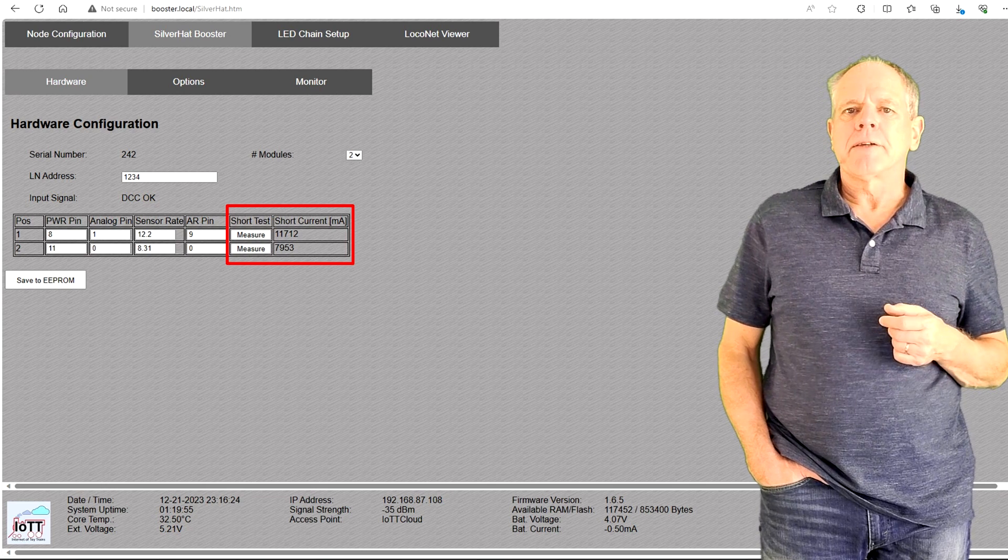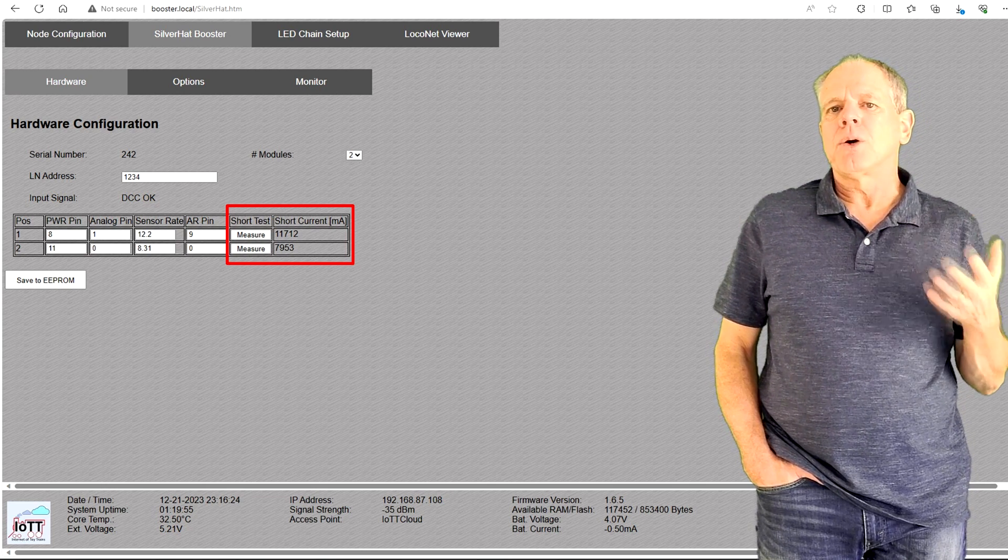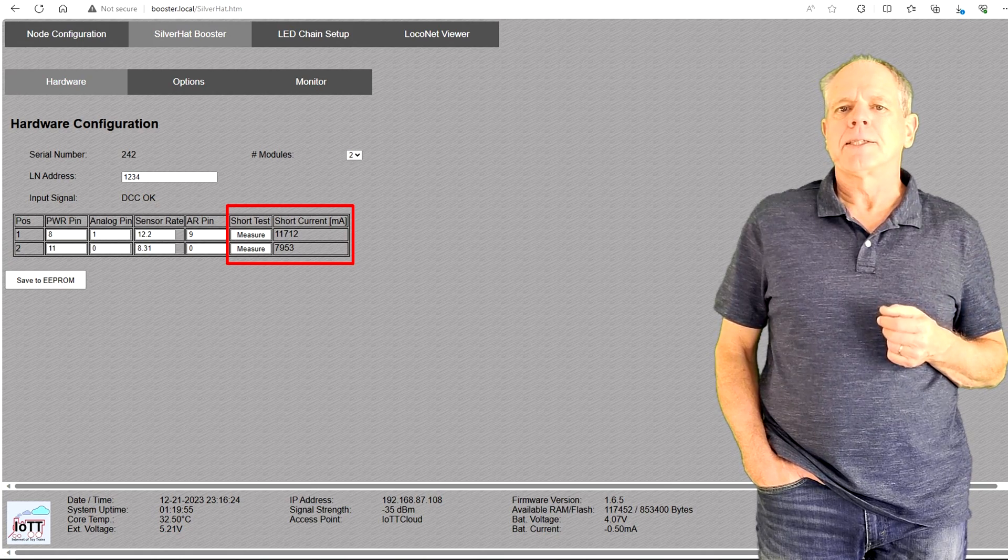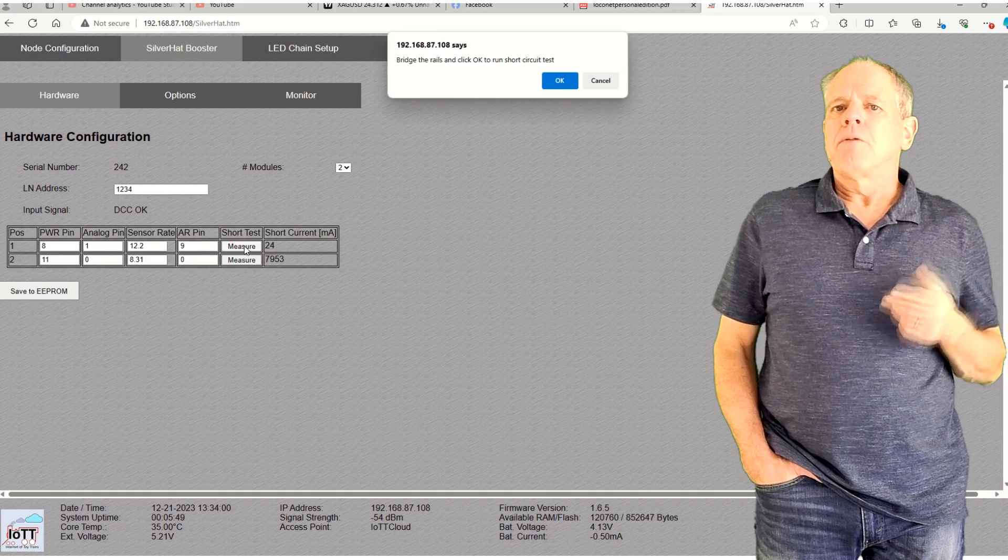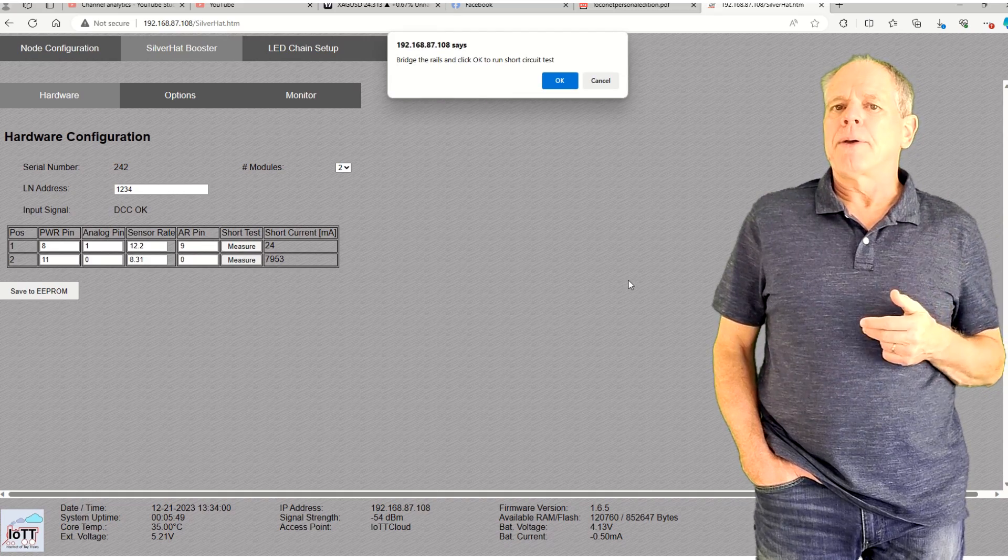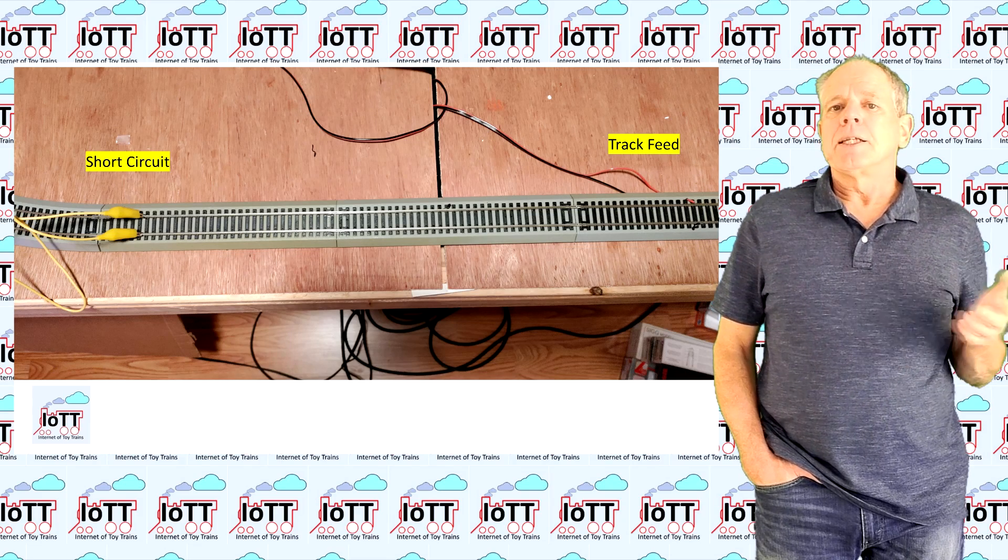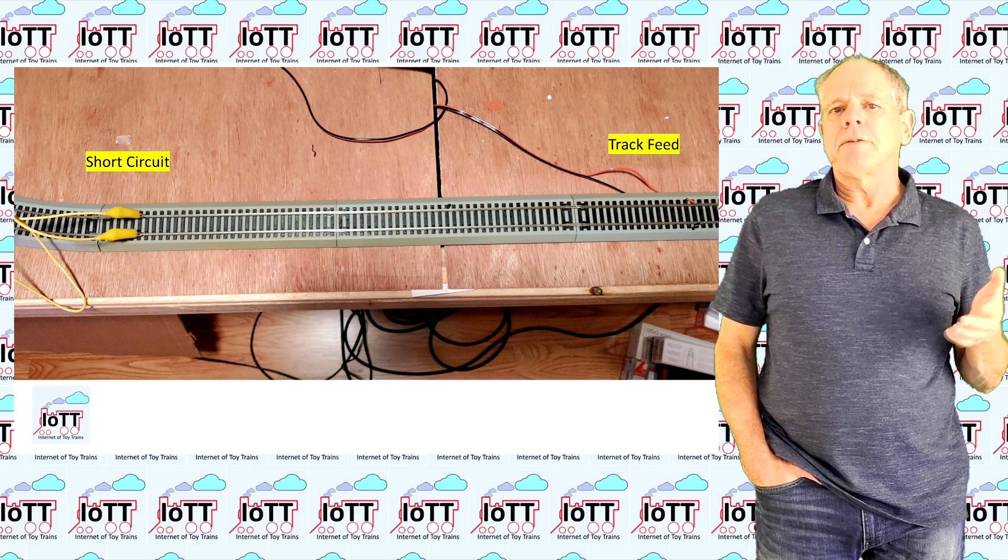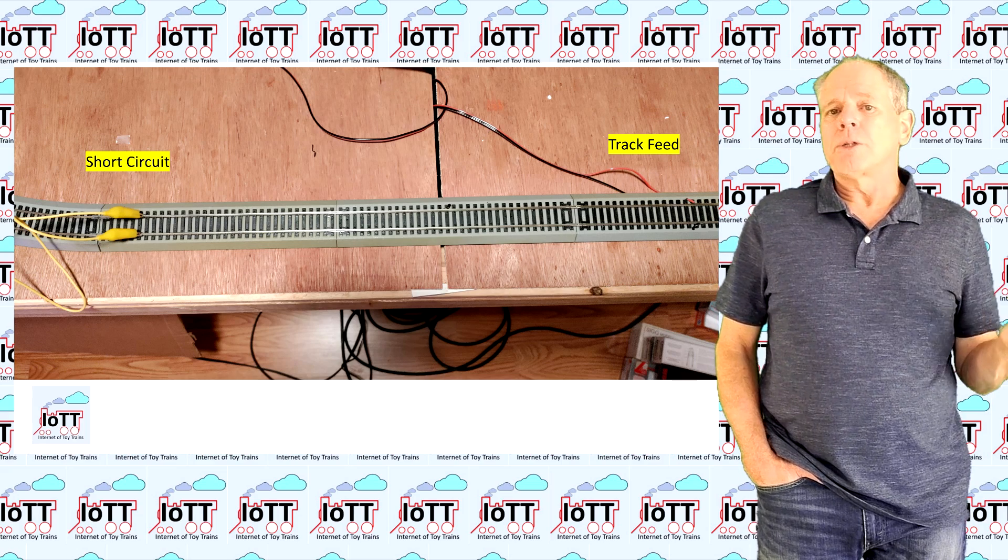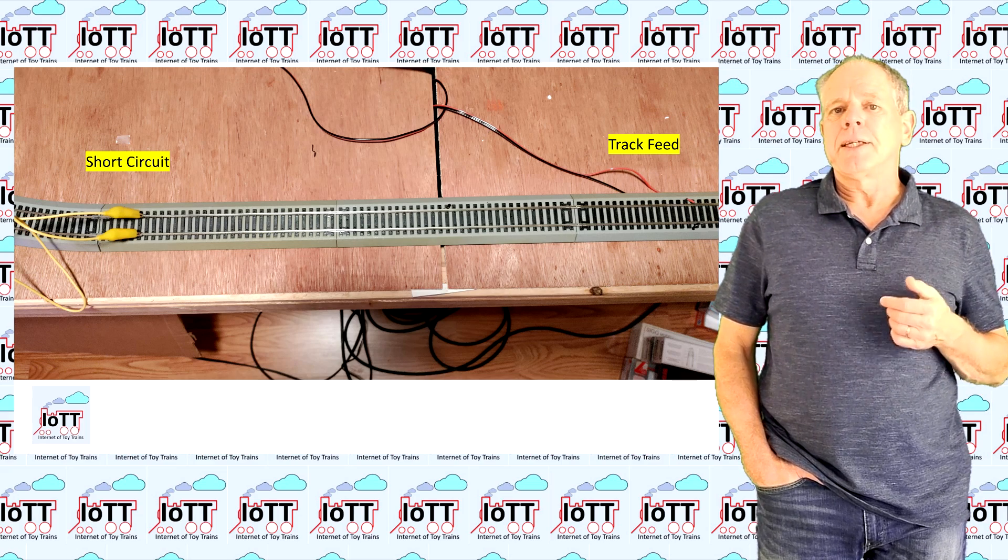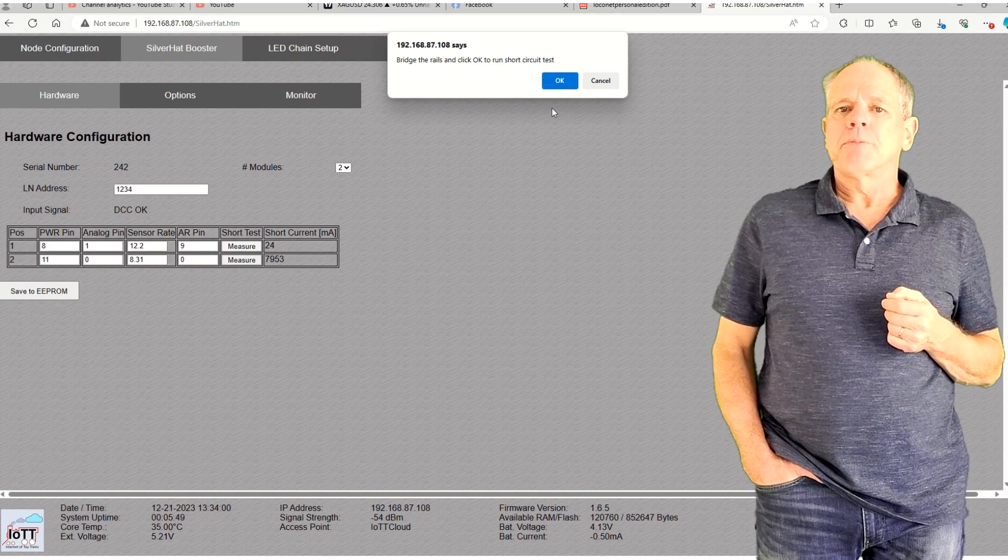The only remaining item is measuring the short circuit current, which depends on the track supply voltage and the total resistance of your track system. To measure, click the measure button, which will switch off the track power, then make contact between the two rails somewhere on the layout. It is best to create this short circuit as far from the track feeder as possible, so that the lowest possible short circuit current is measured.